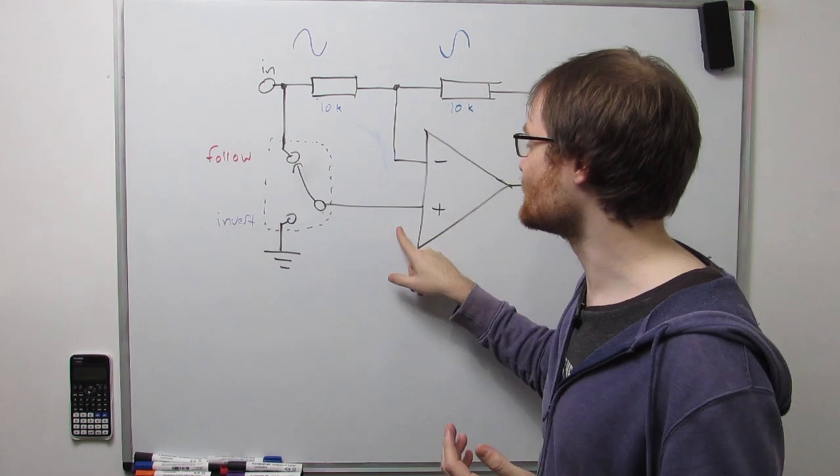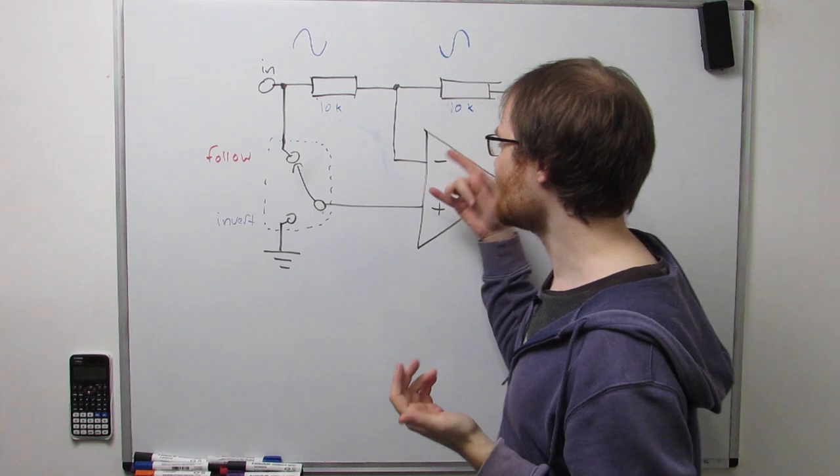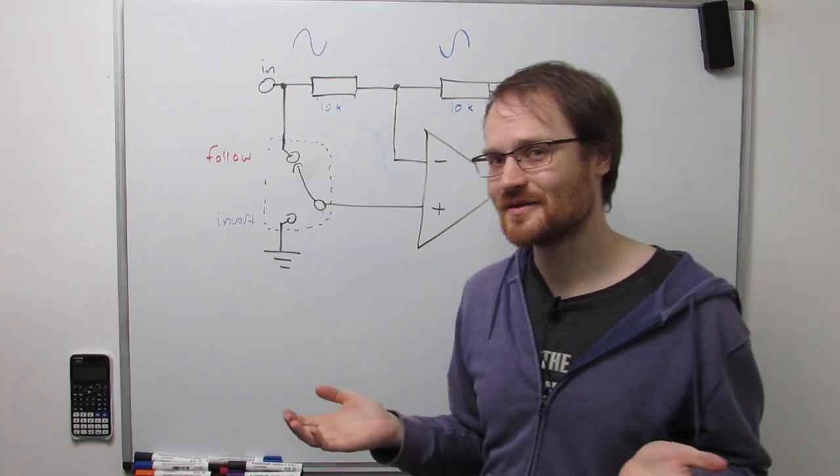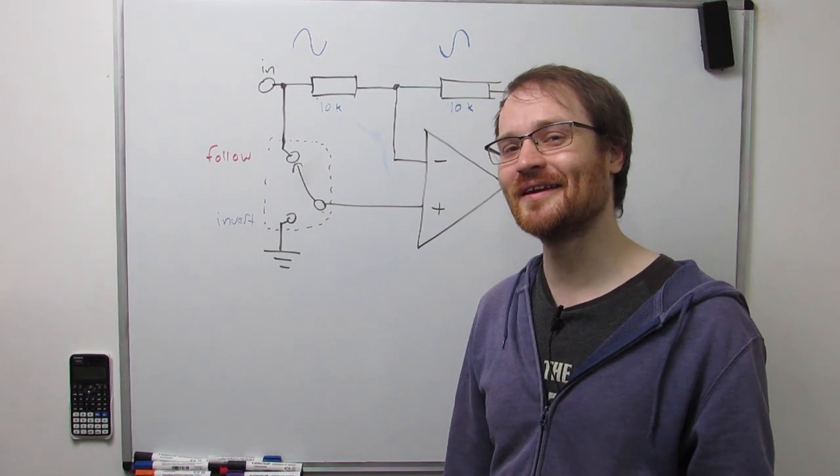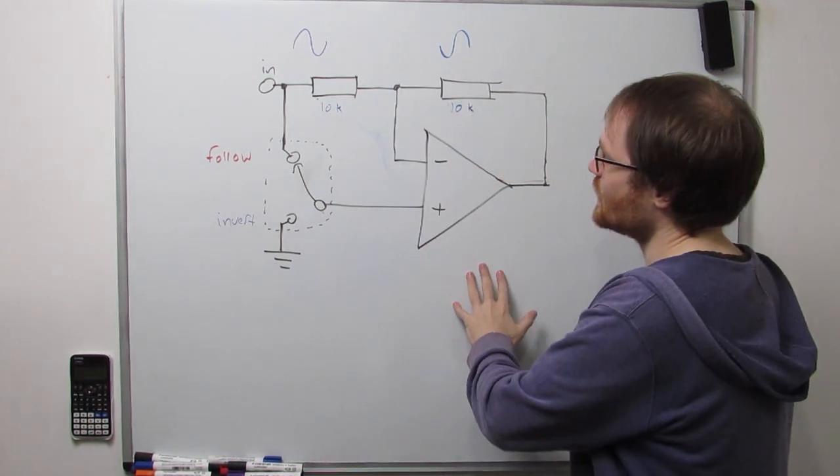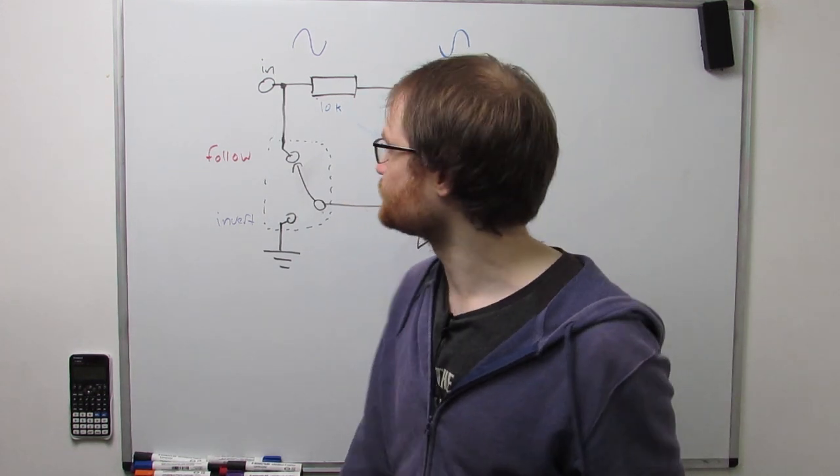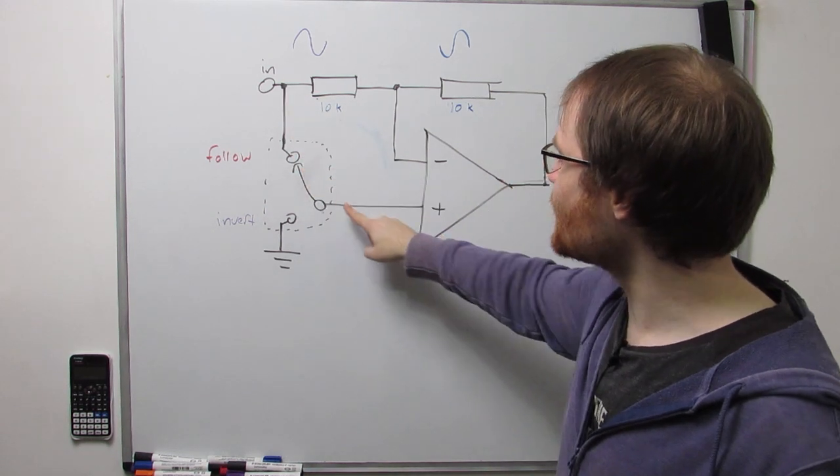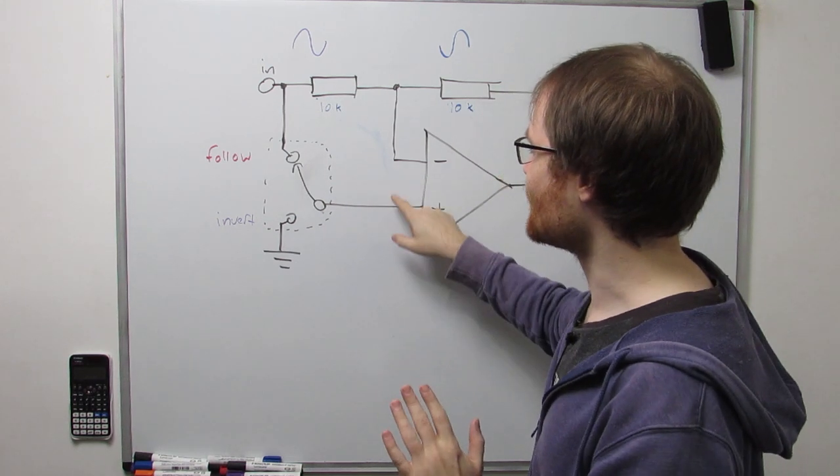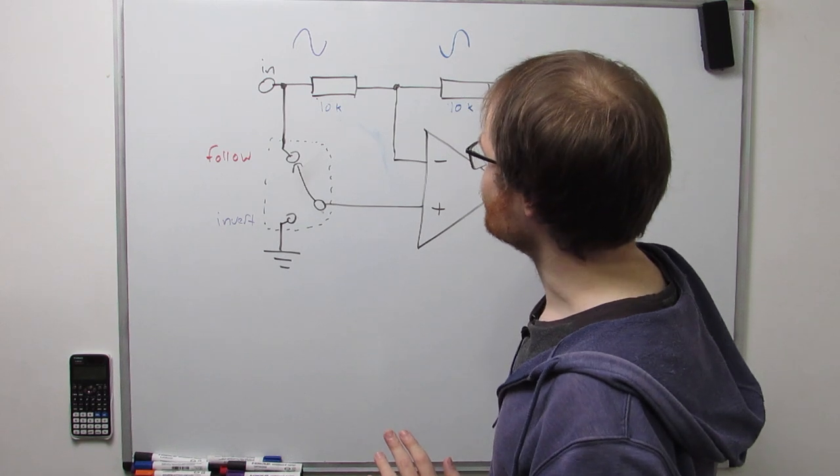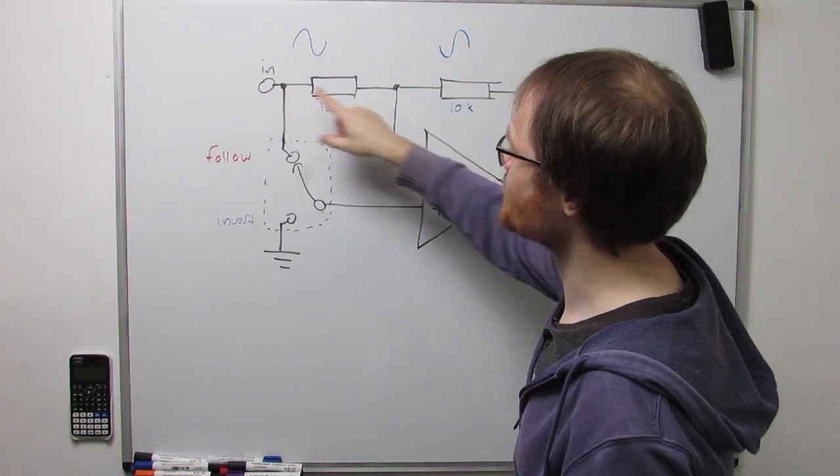So the op-amp has nothing to amplify. You might think, well, the op-amp wants to make these two inputs the same, and we're just feeding the input directly into both inputs. So the two inputs are already the same, so the op-amp doesn't have to do anything. So the output is zero, right? If that's what you thought, that is a completely logical and reasonable thing to think, but it's not what is going on. Because we have this negative feedback here, remember, the output does what it can to make these two inputs the same.